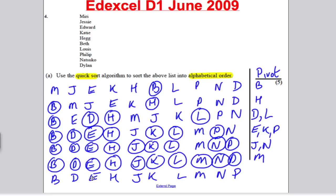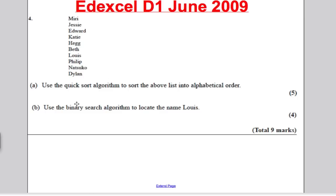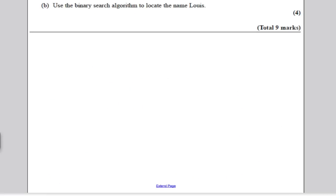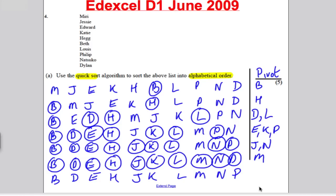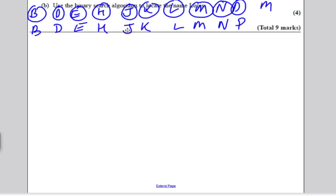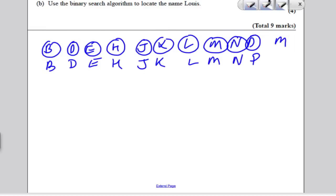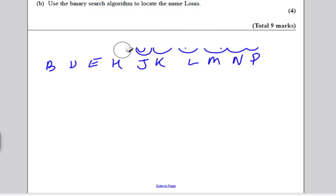I've done the quick sort part of this question in previous video, so I encourage you to look at the video on the quick sort past paper questions to have a look through that. But here were the answers I got for that in order. It was Beth, Dylan, Edward, Hague, Jesse, Katie, Louis, Miri, Natsuko, and finally Philip. Look at my previous video to see the answers. I'm going to focus mainly on the binary search. Now remember to do a binary search they have to be in order, so the order we want them therefore in is this order here. This is our previous working here, and this is the order that we would start off working our algorithm in.